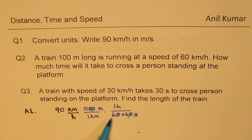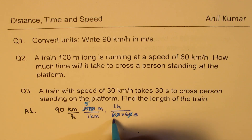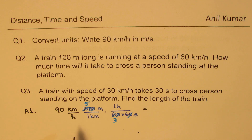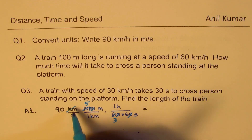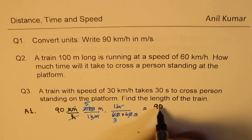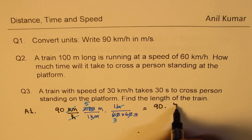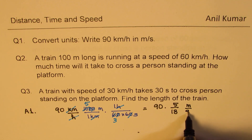Looking at this conversion factor in more detail — when you cancel the zeros, six can be divided by two and ten can be divided by two, so you get 5 and 3 respectively. We also cancel the units: kilometers cancel with kilometers and hours cancel with hours. So we get 90 times 5 over 18 meters per second.